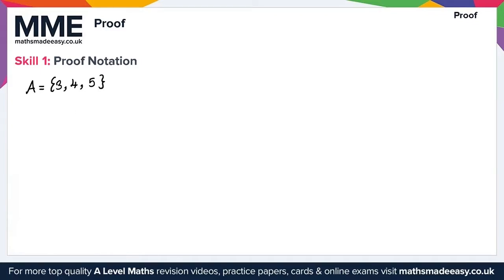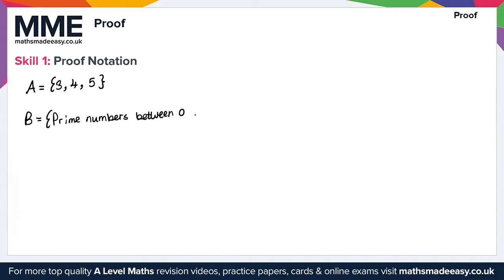There are different ways we can write sets. One example is where we list our elements — that's set A with those three elements. For example, we've got set B, which we can write as the prime numbers between 0 and 10. Writing this out in full: those are the prime numbers between 0 and 10.